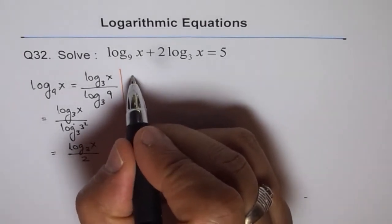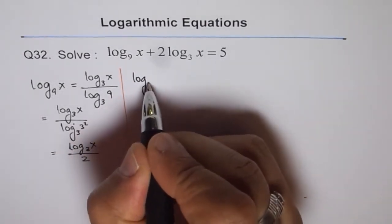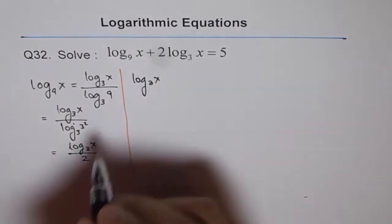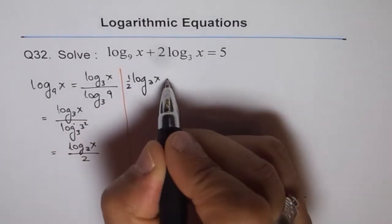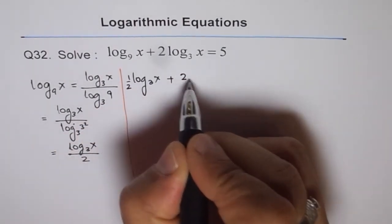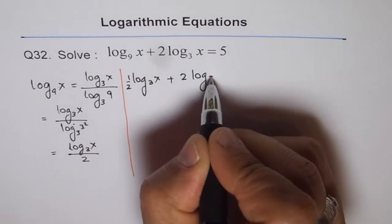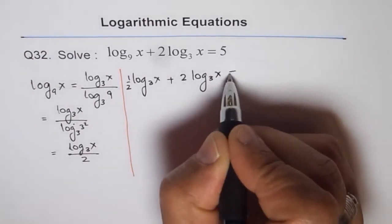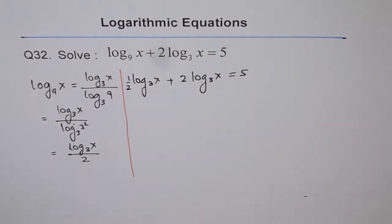Now we can write this equation as log base 3 of x times one-half, plus 2 times log base 3 of x equals 5. That becomes our equation now.